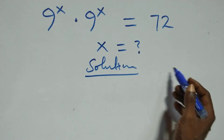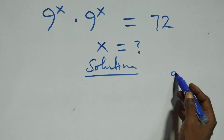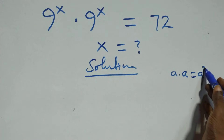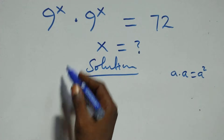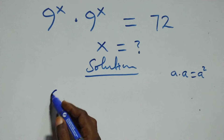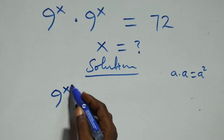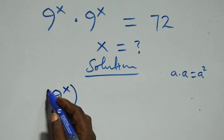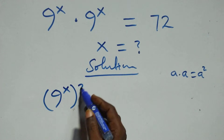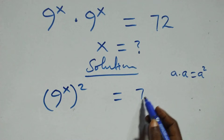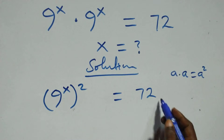This follows when we have a times a, which is the same as a squared. So we can write this as 9 raised to the power x/4 squared equals to 72 here.